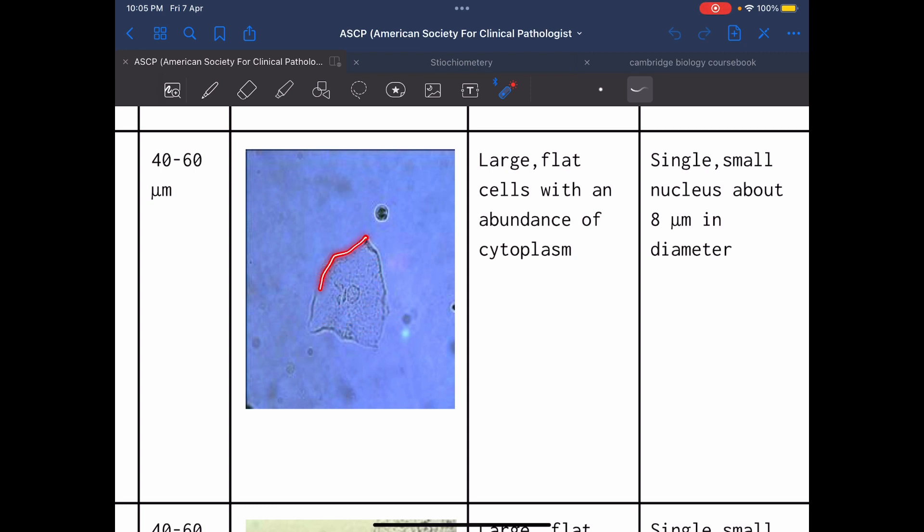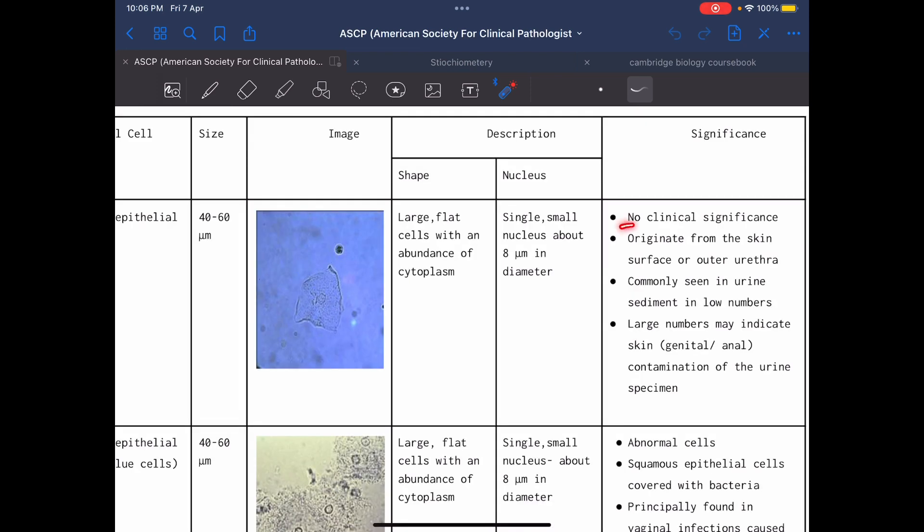The boundary is irregular and the nucleus is in the center and it is small. There is no clinical significance of presence of squamous epithelial cells. It is originating from skin surface or outer urethra. If it is increased in number, this indicates contamination of urine specimen. This means that specimen collection is not appropriate.